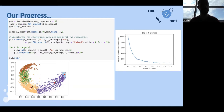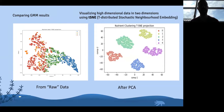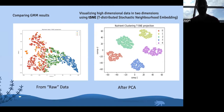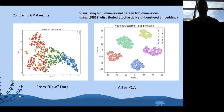We also applied the GMM on the raw data to see how that compared to using the principal components as features. These two plots show the high-dimensional data reduced to two dimensions using the t-SNE package in Python. What you can see is that the raw data was not isolating the clusters as clearly as with PCA — using PCA makes the clusters much more distinct.